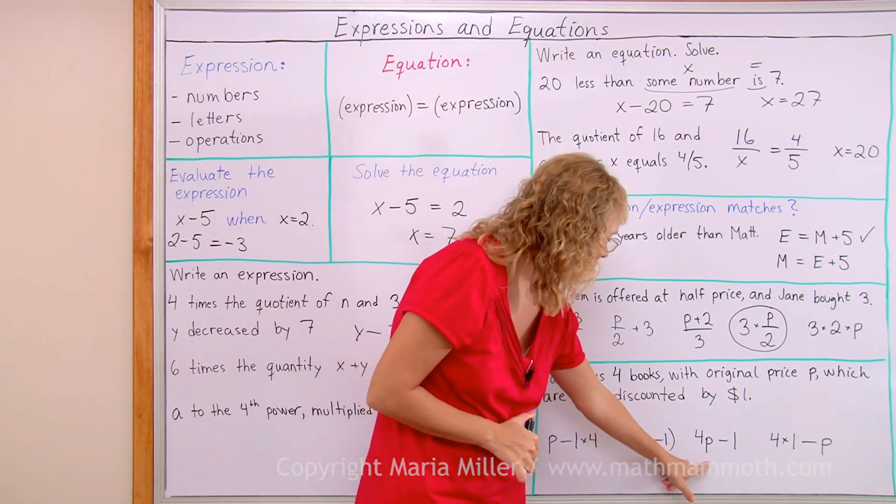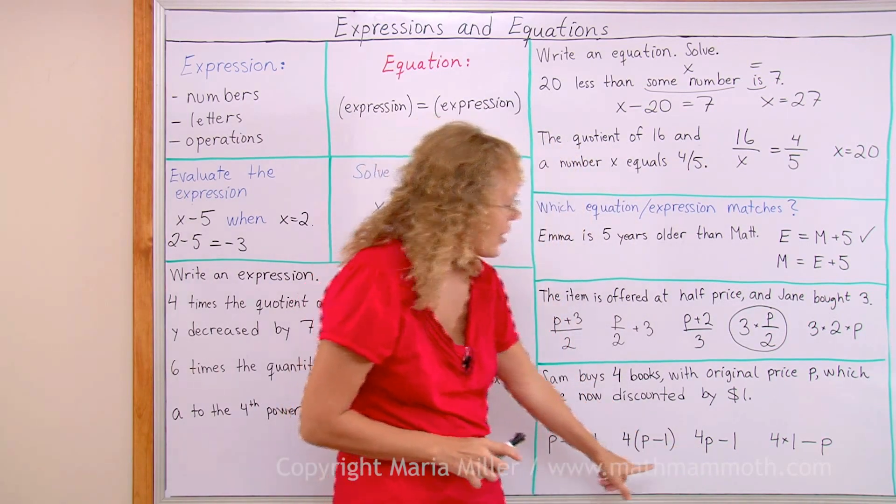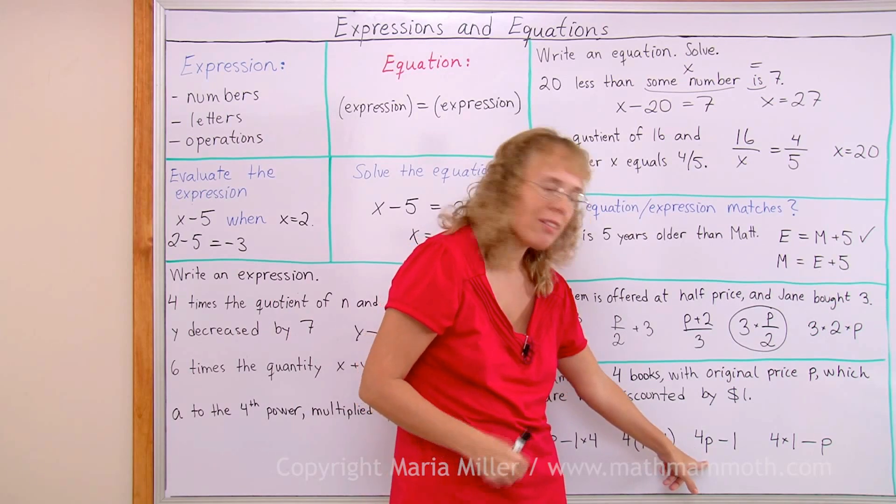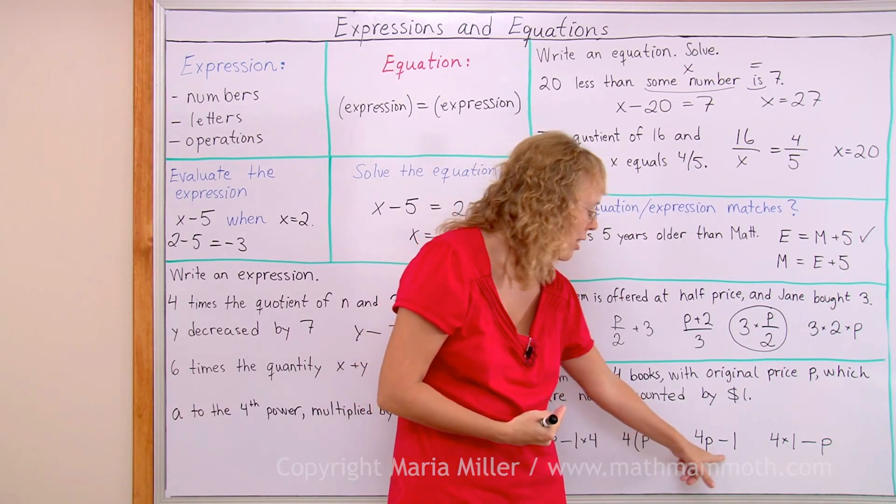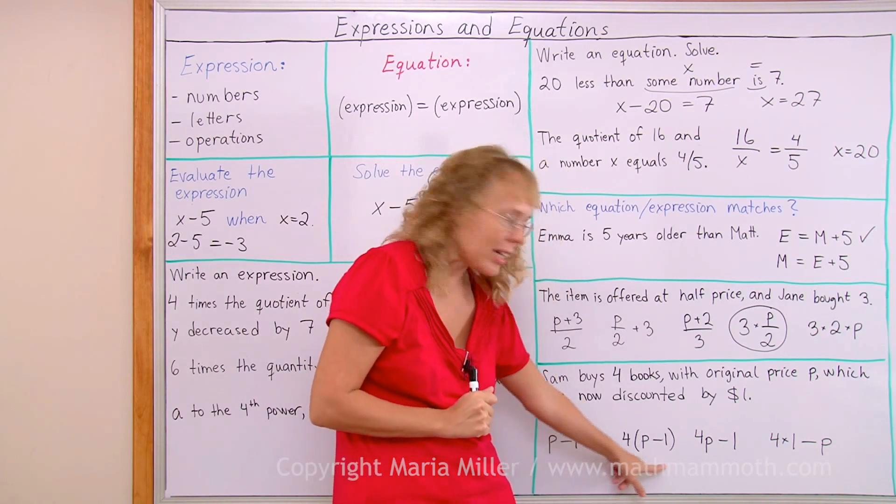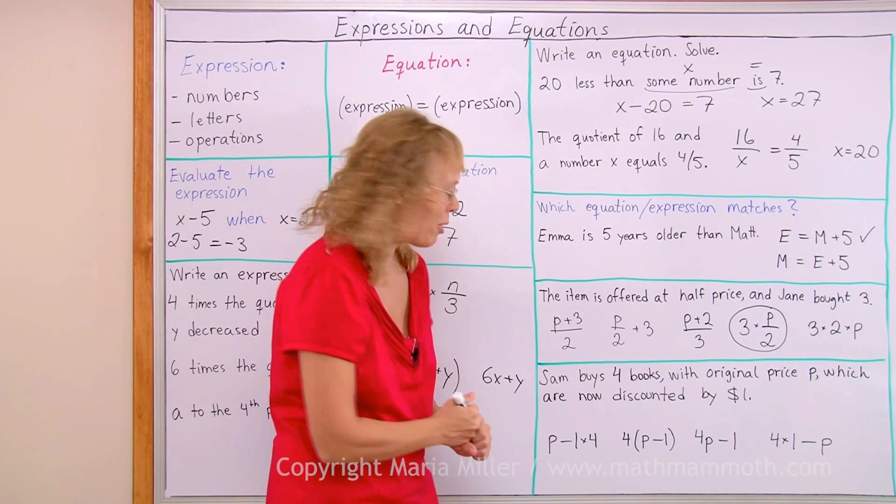And, okay, for example, here we have p minus one multiplied by four. But this will not work because by order of operations, the four p, four times p would be done first and then the subtraction. Instead, we need to choose this one where we first subtract, the parentheses are indicating that, and then we multiply by four, okay?